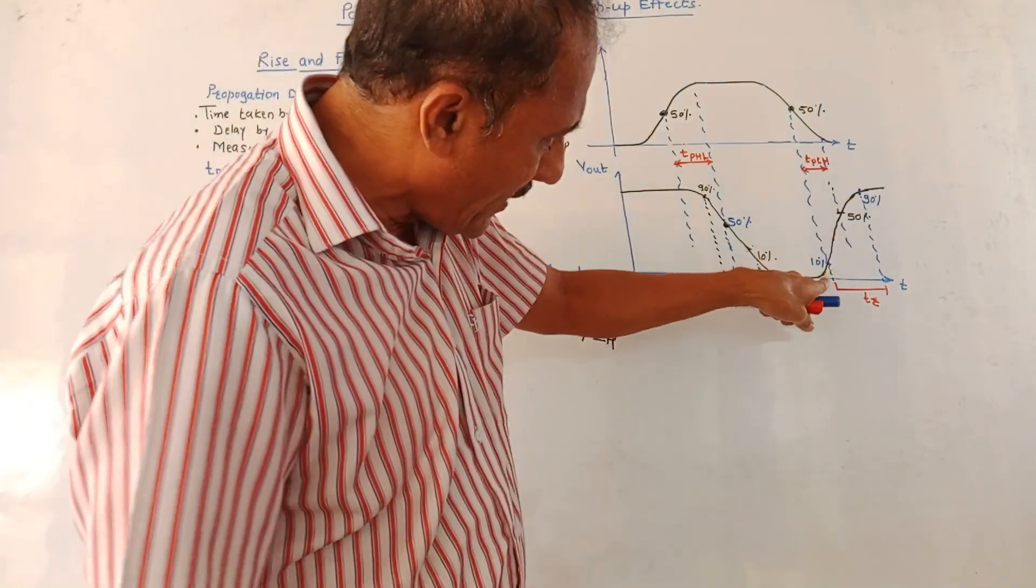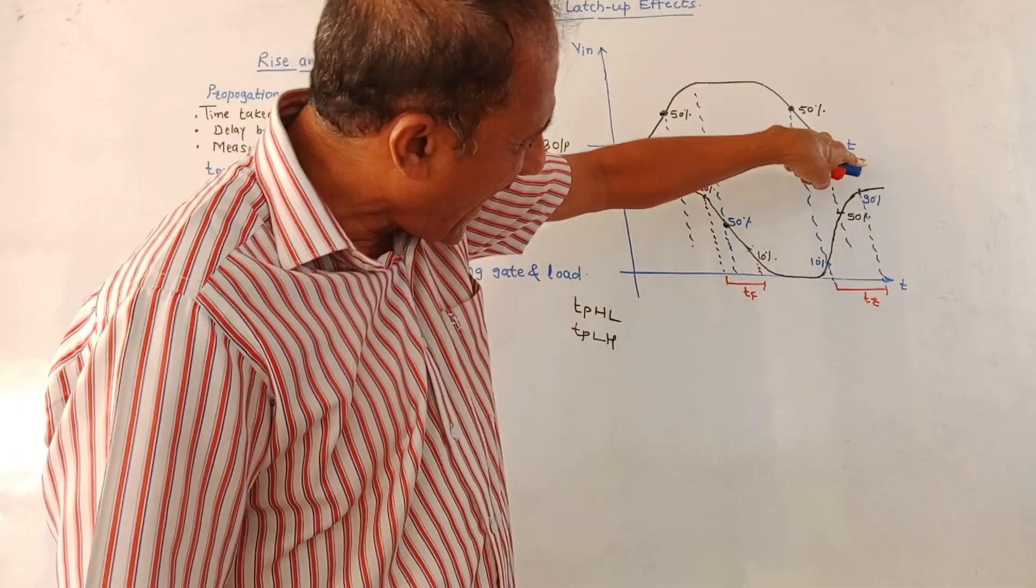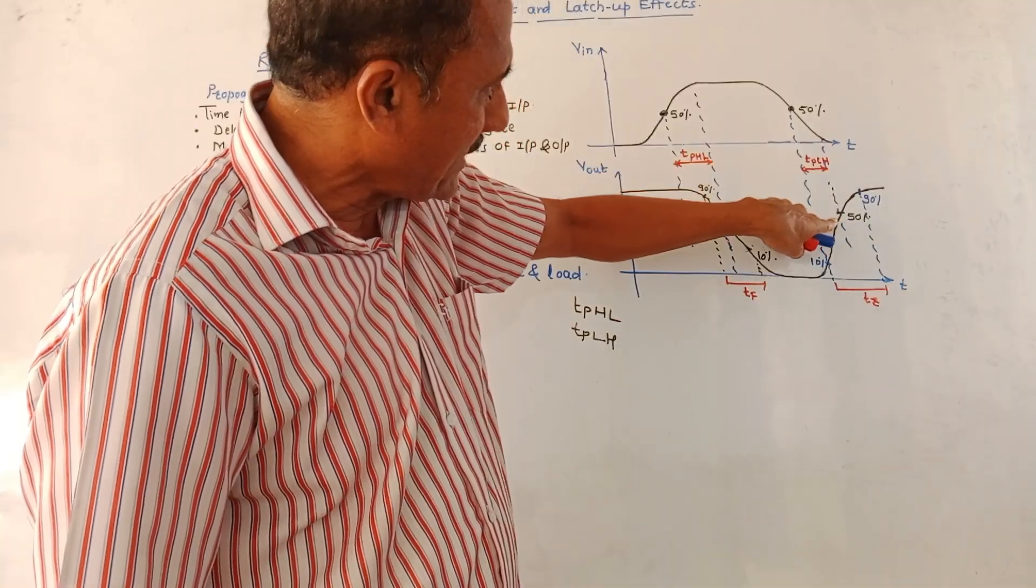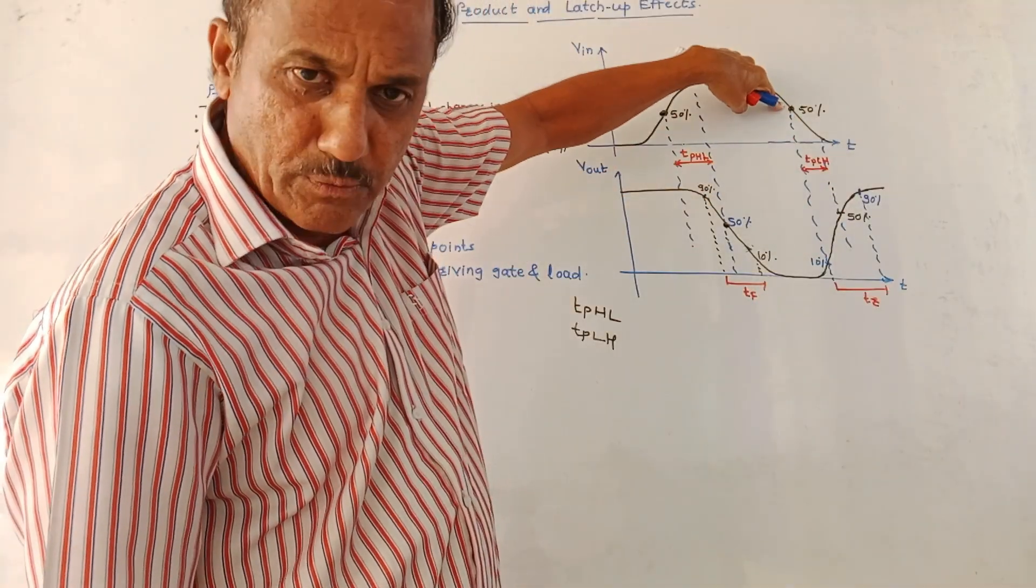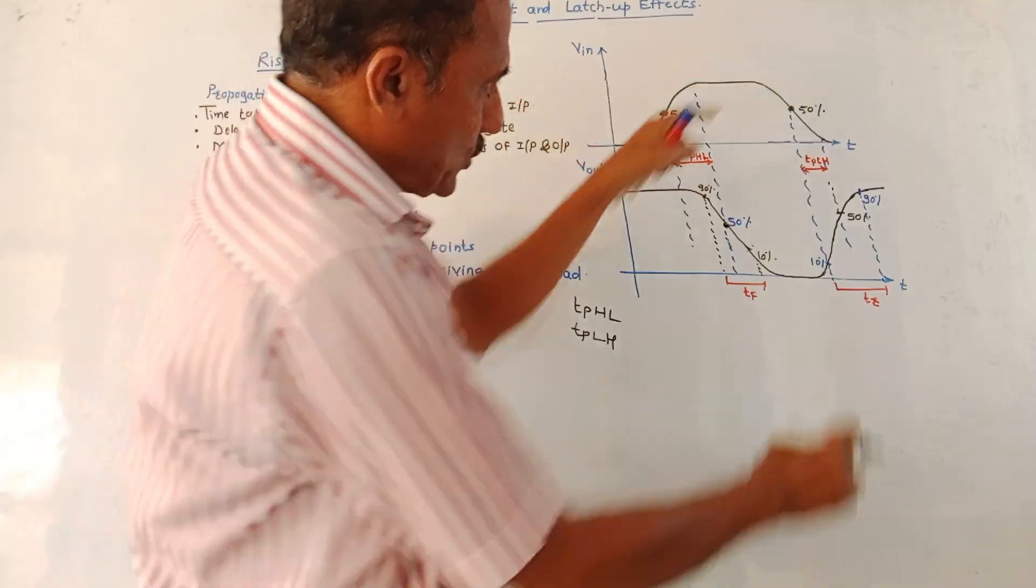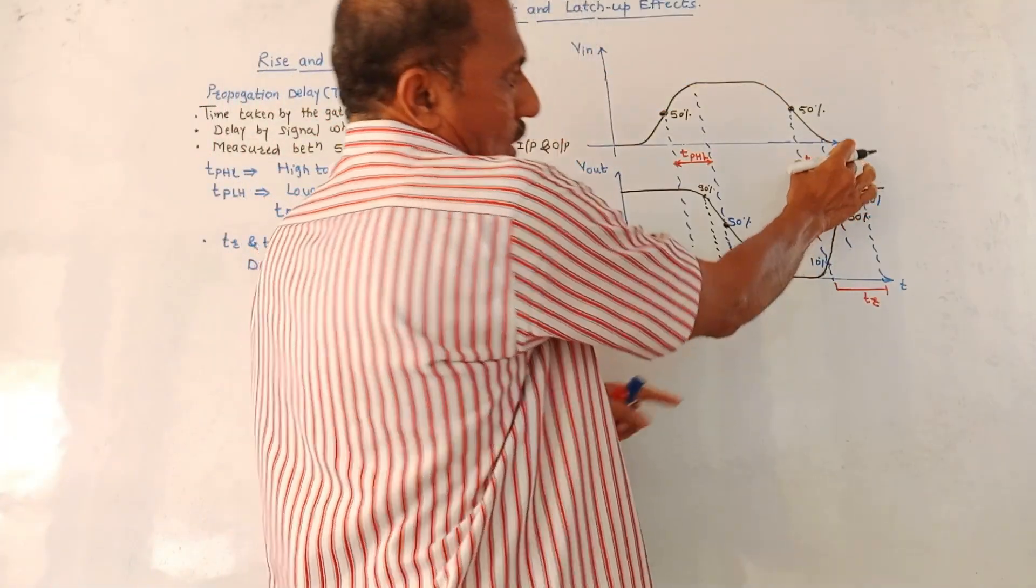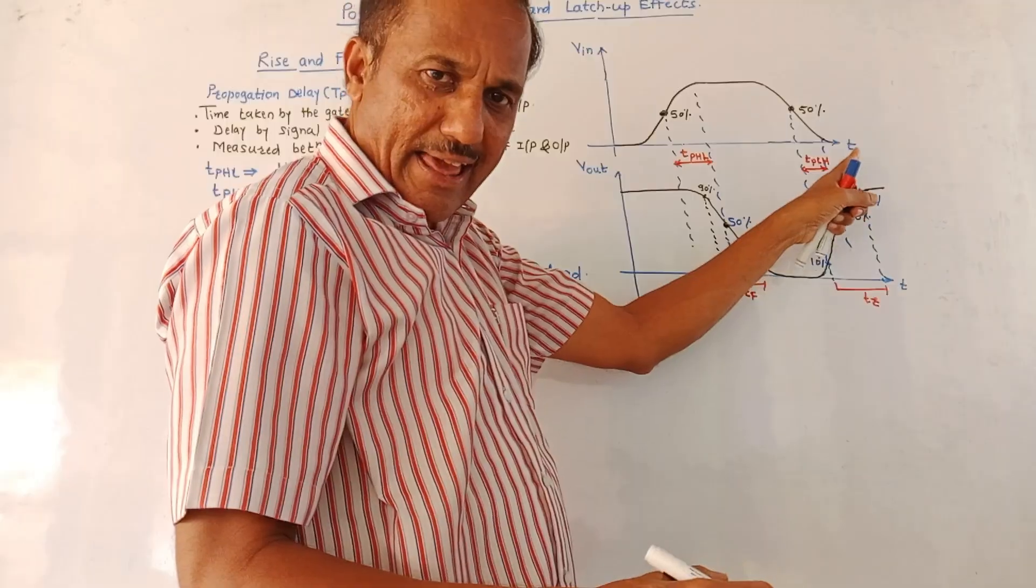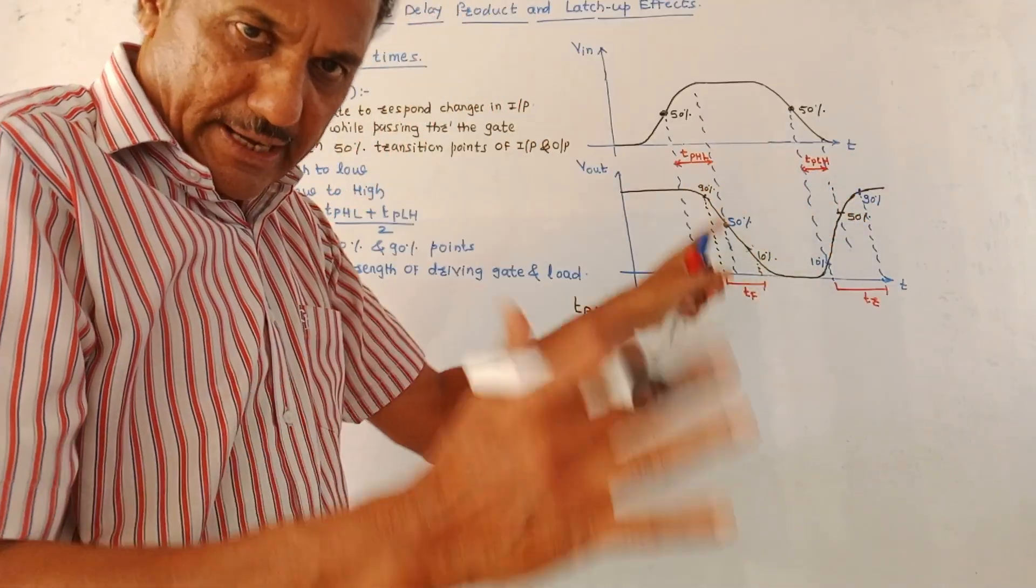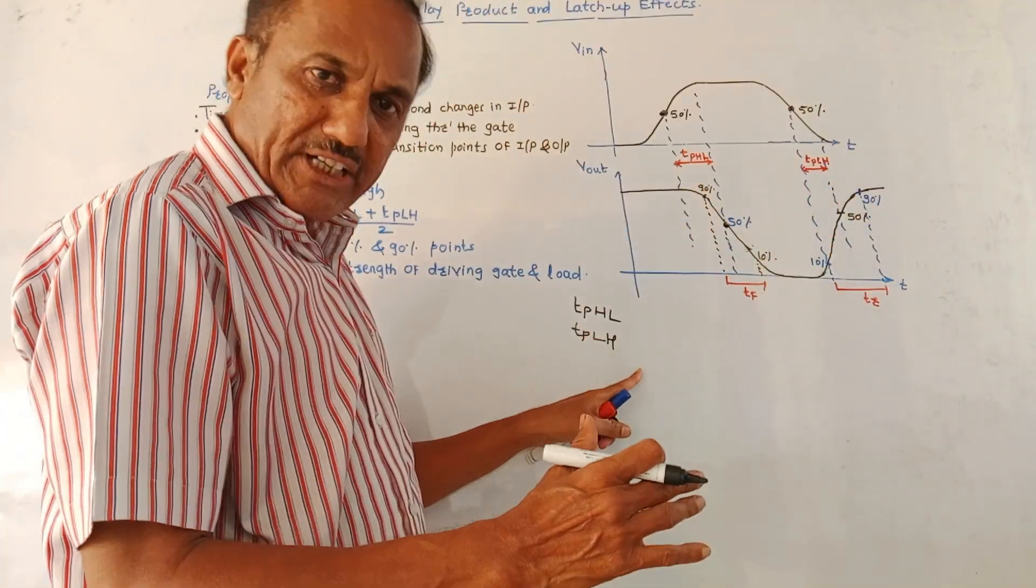This is the output waveform when it transfers from low to high level. This is the 50% point. Corresponding 50% point of the input waveform is this point. Time difference between these two is TPLH, that is propagation delay for low to high transition.